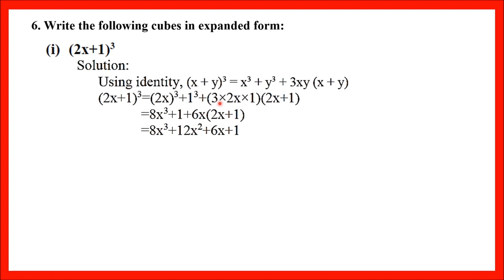Next, multiply: 3 × 2x = 6x, so I write 6x. As it is, I write (2x + 1). Now simplify this expression: 8x³ first, then 1. Then 6x × 2x = 12x², and 6x × 1 = 6x. So (2x + 1)³ = 8x³ + 12x² + 6x + 1. I hope you understood.